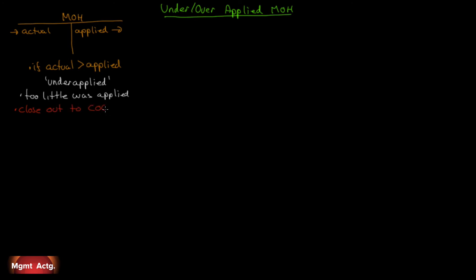How do I know what the debit and what the credit is? It's very simple — actual is greater than applied. We have to have a credit entry to offset the debit entry, because actual enters in on the debit side. There's our manufacturing overhead with a credit entry to get to a balance of zero. Because if actual was greater than applied, we would have a balance on the debit side of the T-account.